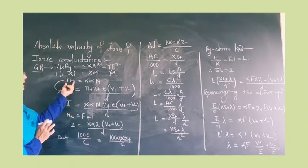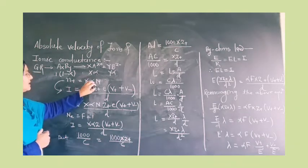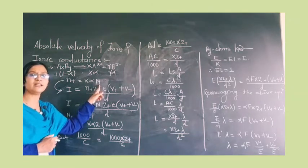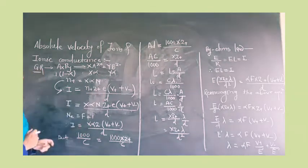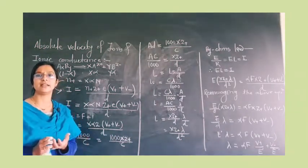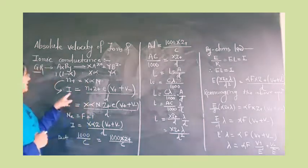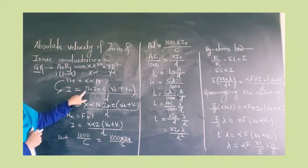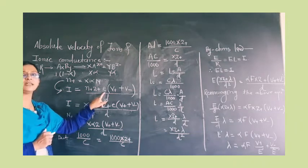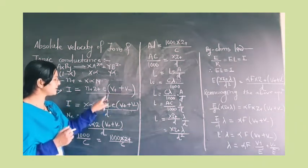N+ is the number of cations, alpha is the degree of dissociation, and capital N is Avogadro's number. When we understand the number of ions and their notation, we determine the current. The current is: I = N+ · Z+ · E · (V+ + V−) / D, where E is the potential drop.